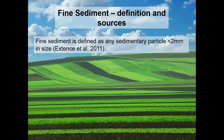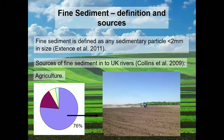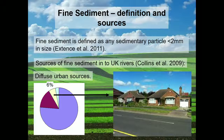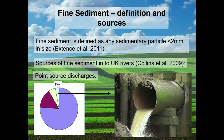The biggest contributor of fine sediment entering watercourses in the UK is from agriculture, followed by eroding channel banks, then diffuse urban sources such as road runoff, and then point source discharges including storm outflow drains and sewage treatment work outflows. Fine sediment is a natural part of the freshwater ecosystem, but in the last century fine sediment yields have almost doubled, mainly due to agricultural intensification. In the future, climate change is expected to raise levels further due to increased rainfall intensity and more low-flow events.